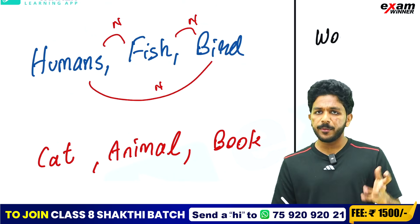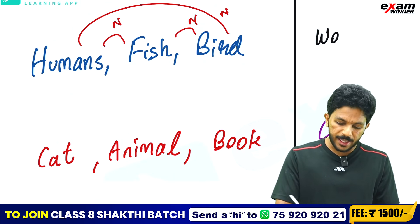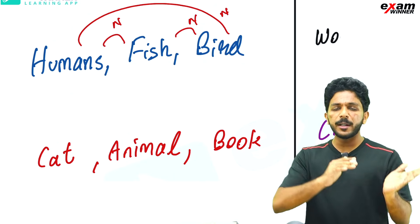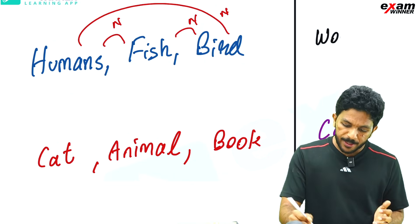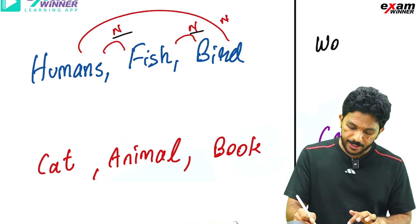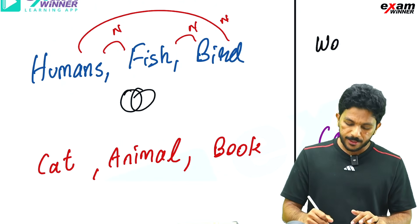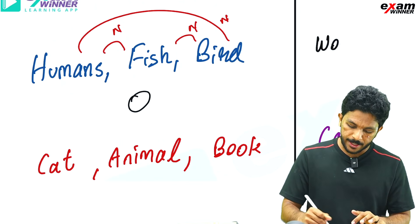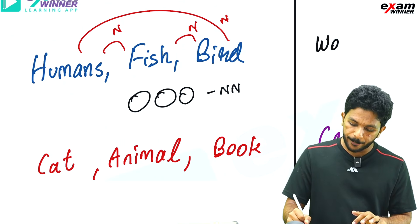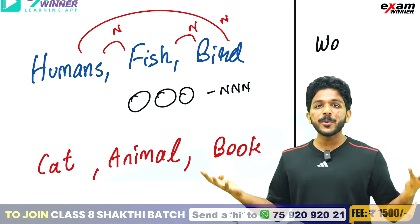All relationships here are None — N, N, N. Since all three pairs are None, we get 3 separate circles. Fish, humans, and birds are all separate — so the answer is three separate circles.